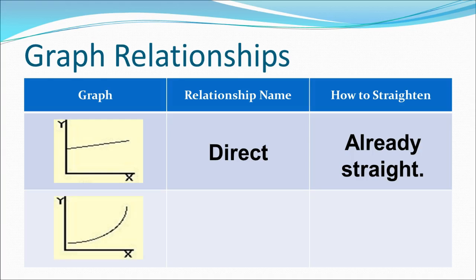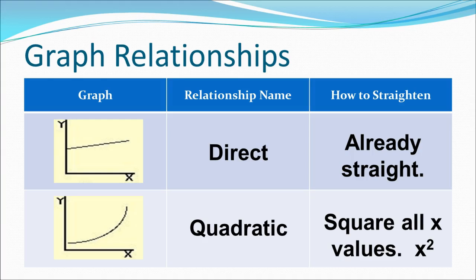This next graph starts to slope upwards. As x increases, y increases at a greater rate as time goes on. We call this a quadratic relationship or exponential relationship. We straighten this relationship by squaring all x values — so you would describe this as x squared. If you keep your algebra in mind, you'll remember that a quadratic equation has a degree of two, and the graph shown is half of a parabola, which a quadratic equation will graph.